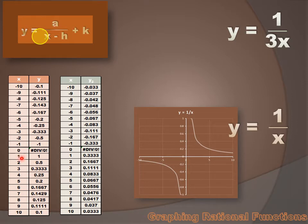We'd notice that in the parent function, when x equaled 1, y equaled 1. But in our new function, when x equals 1, y equals 0.333, or 1 third. We divided our y value in the parent function by 3. It's 1 third of its previous value.